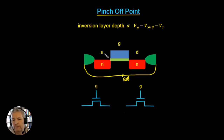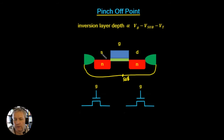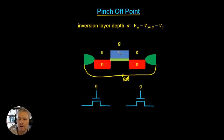So far we've only looked at the gate and the substrate, and we know that the substrate is actually connected to the source. So each time we write V_gate minus V_sub, equivalently we can say V_gate minus V_source. We've seen what happens to the inversion layer as the gate voltage changes, but we haven't looked at anything to do with the drain voltage — how does the drain affect any of this?